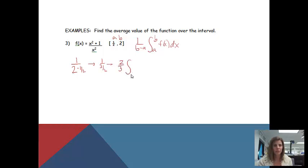From here, I'm going to go from a to b, so I'm going to go from 1 half to 2 of my function. My function is x squared plus 1 over x squared dx. Now we can use the capabilities of our calculator to do that. So please grab your calculator out.